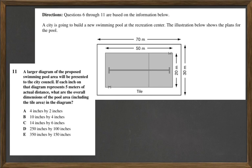A larger diagram of the proposed pool area will be presented to the city council. If each inch on that diagram represents 5 meters of actual distance, what are the overall dimensions of the pool area including the tile area in the diagram?